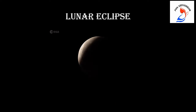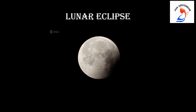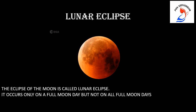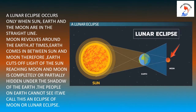Now, we are going to see about the lunar eclipse. The eclipse of the moon is called a lunar eclipse. It occurs only on a full moon day, but not on all full moon days. A lunar eclipse occurs only when the sun, earth and the moon are in a straight line. At times, the earth comes in between the sun and moon, so the earth cuts off the light of the sun from reaching the moon, and the moon is completely or partially hidden under the shadow of the earth.